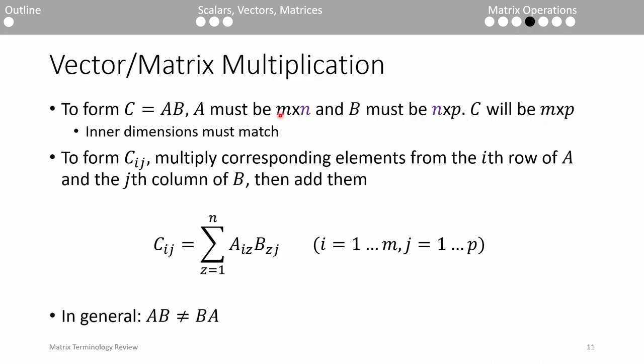The resulting matrix C will be size M by P, which are the outer dimensions of A and B, respectively. To compute the element in the i-th row and j-th column of C, we take the sum of the product of the elements in the i-th row of A and the j-th column of B. We'll go over an example in the next slide. One important point is that in general, matrix multiplication is not commutative. A times B does not always equal B times A.